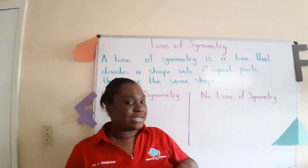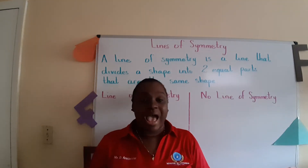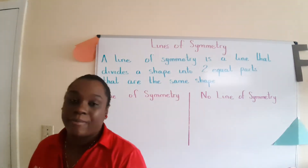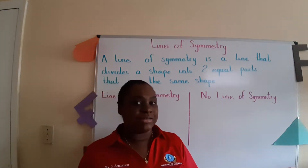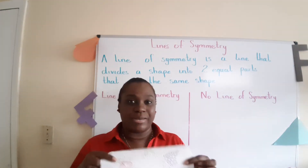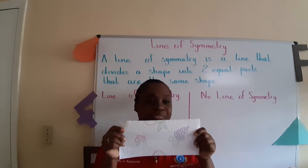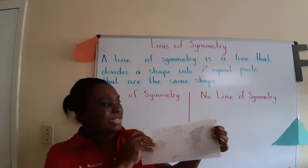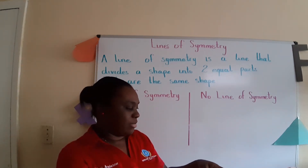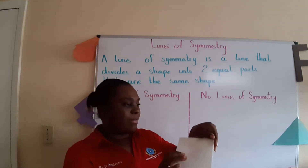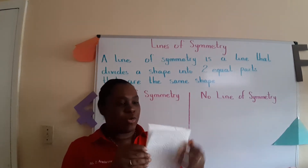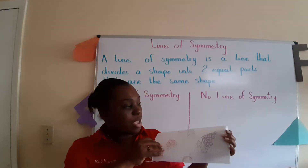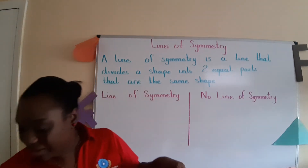Do you see anything else in your house that has a line or lines of symmetry? I found something else — here's a napkin. Do you know the shape of this napkin? It's a rectangle. So let me see if I fold my napkin. I notice that the two sides match, they are the same. So therefore there's a line of symmetry.